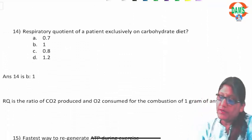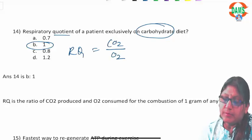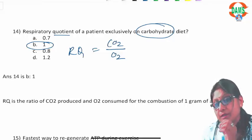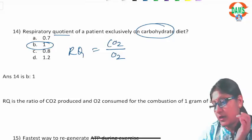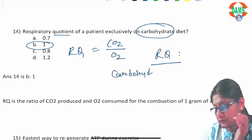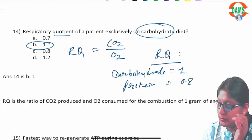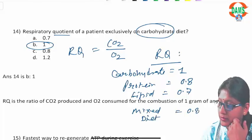Question fourteen: the respiratory quotient (RQ) in a patient on an exclusively carbohydrate diet is one. RQ is CO2 produced divided by O2 consumed for combustion of a food item. RQ for carbohydrate is 1.0, for protein it is 0.8, for lipid it is 0.7, and for a mixed diet it is 0.85.